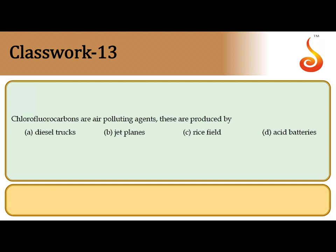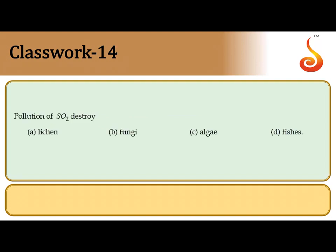The 13th question: Chlorofluorocarbons (CFCs) are produced by aerosols, refrigerators, air conditioners, and jet planes. Among the given options, the correct answer is option B: jet planes, which are a source of chlorofluorocarbons.